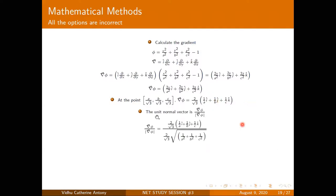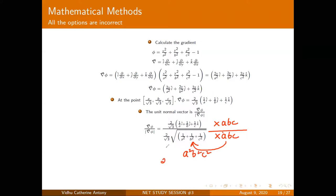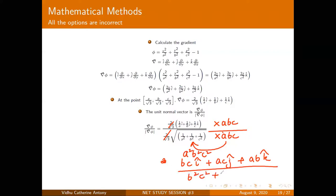The unit normal vector is this vector divided by its magnitude. Multiplying numerator and denominator by abc: the numerator becomes bcî + acĵ + abk̂, and the denominator becomes √(b²c² + a²c² + a²b²). So the unit normal is (bcî + acĵ + abk̂) / √(b²c² + a²c² + a²b²). All options given in the exam were incorrect — grace marks were awarded.